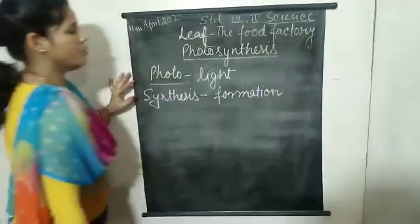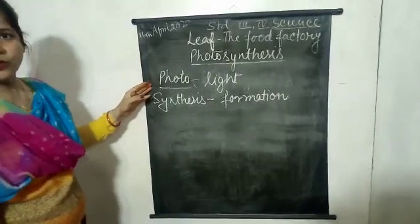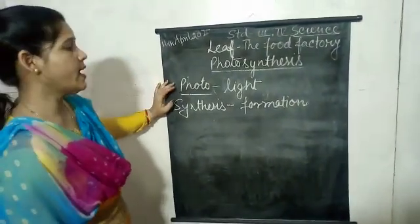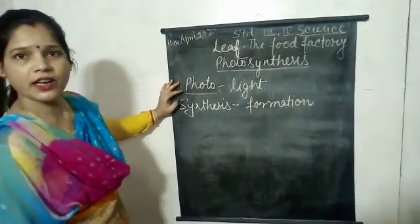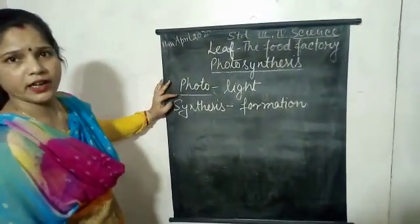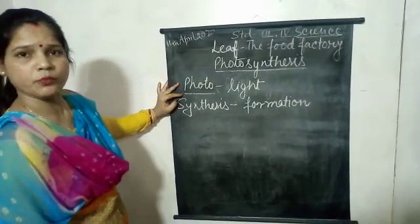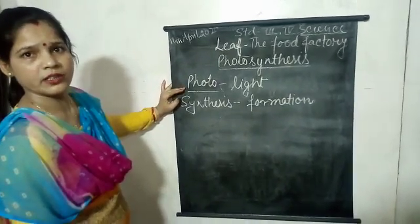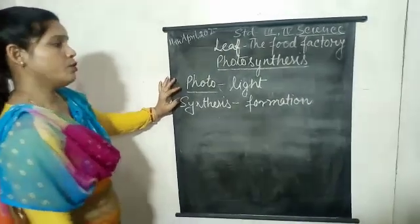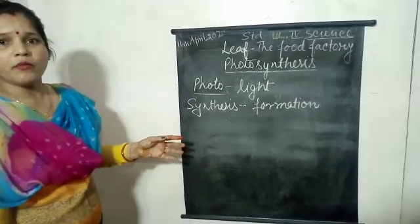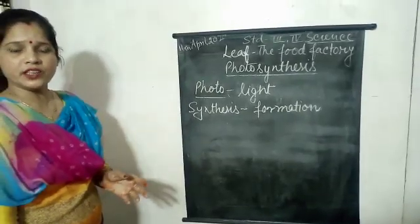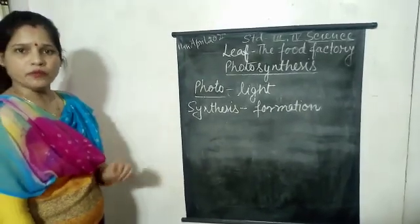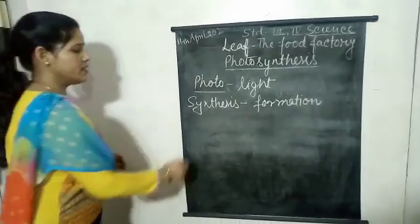So green plants make their food in the presence of sunlight with the help of carbon dioxide and water. This process is called photosynthesis. These four things are very essential for the process of photosynthesis.